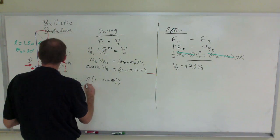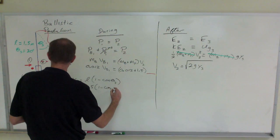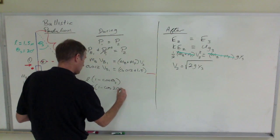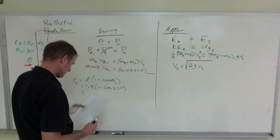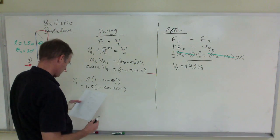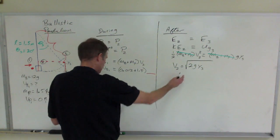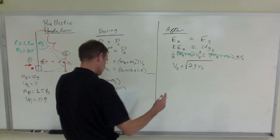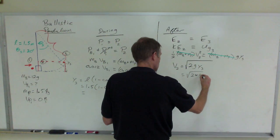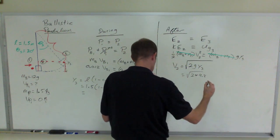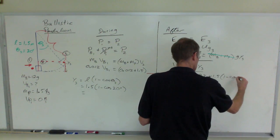So this is 1.5 times 1 minus the cosine of 20 degrees, which comes out to be... Well, wouldn't you know it? I didn't calculate it. I just put it directly into here. I'm sorry about that. I just put it straight in here. That's the square root of 2 times 9.8 times 1.5 times 1 minus the cosine of 20.